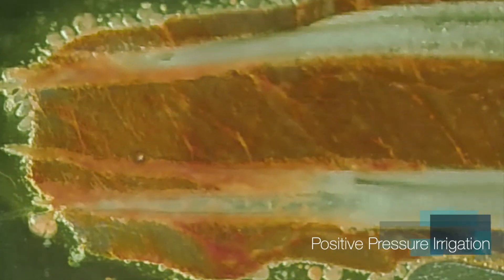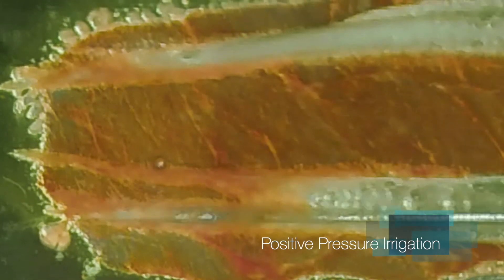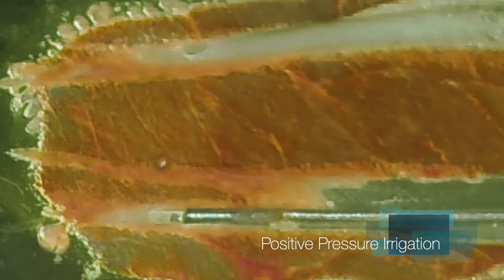Rotary debridement in the lower canal. Suddenly, we have room for the positive pressure irrigation needle, so it can get in there and get the job done.